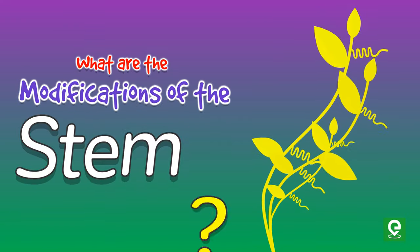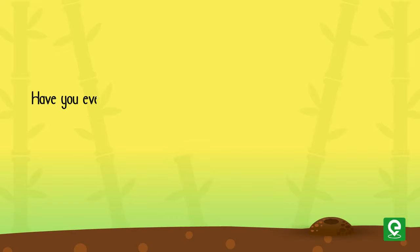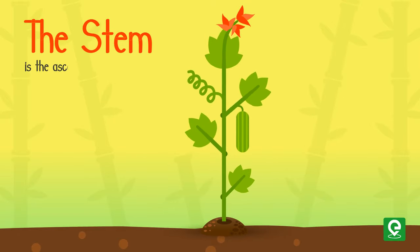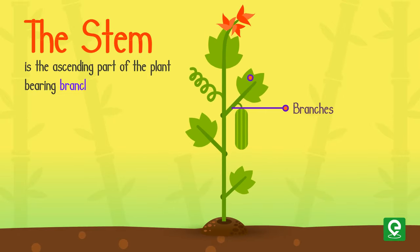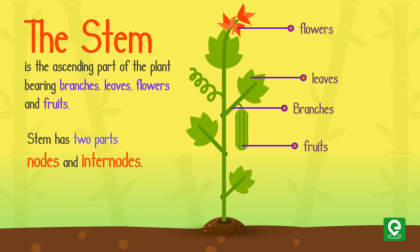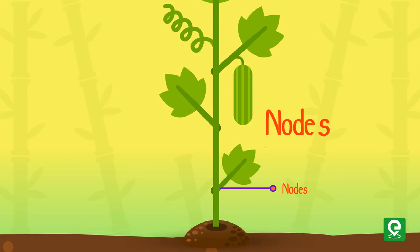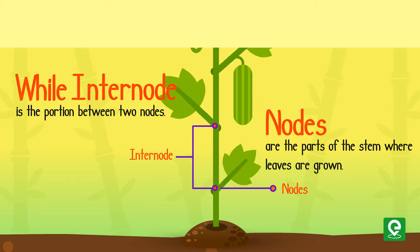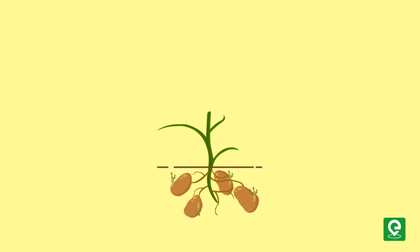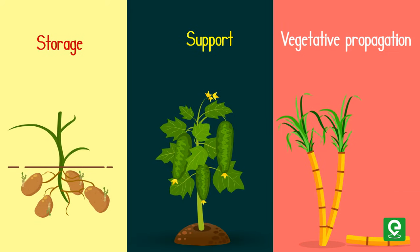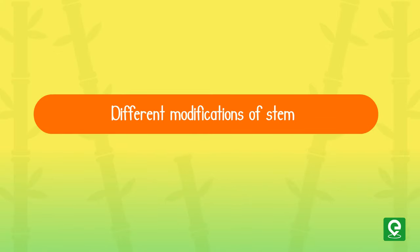What are the modifications of the stem? Have you ever stopped to take a look at the plants around you and think about the stems? The stem is the ascending part of the plant bearing branches, leaves, flowers, and fruits. It has two parts: nodes and internodes. Nodes are the parts where leaves are grown, while internodes are the portions between two nodes. Stems undergo modifications to perform additional functions like storage, support, and vegetative propagation.